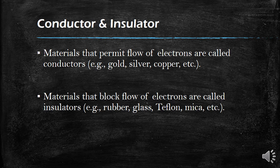Next, a material that blocks the flow of electrons is called an insulator. A conductor and an insulator are completely opposite. An insulator blocks the flow of electrons and does not allow electrical flow — it is not possible for electrons to pass through an insulator.